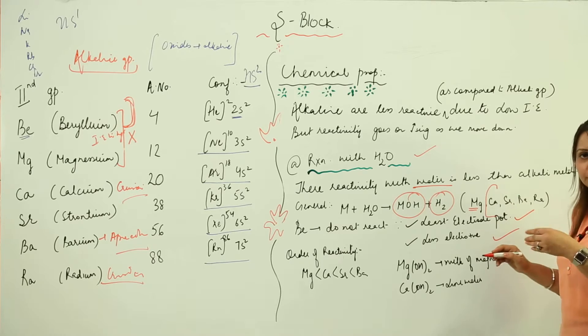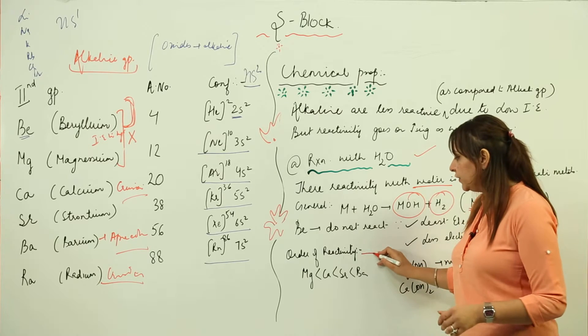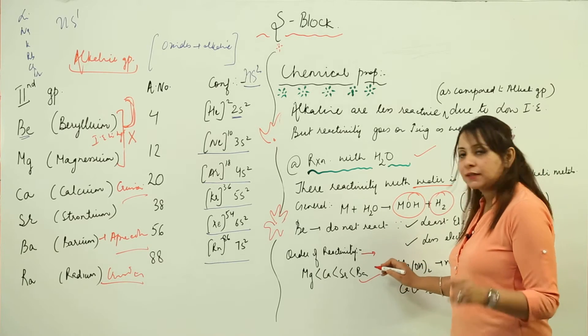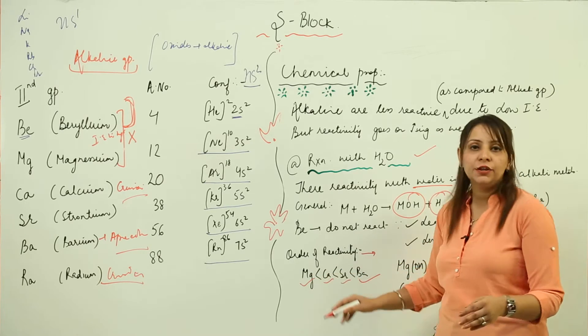If we talk about the members from calcium onwards, they have affinity for water and they are reacting. So as far as the order of reactivity is concerned, barium reacts vigorously, strontium less, calcium less than that, and even magnesium less than that. So this is the order.